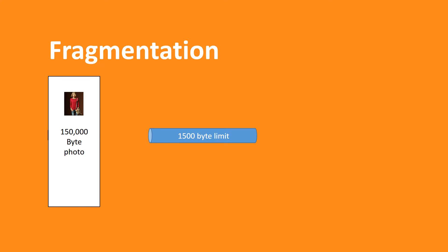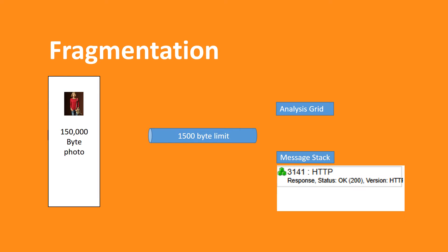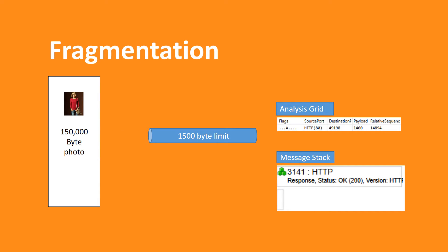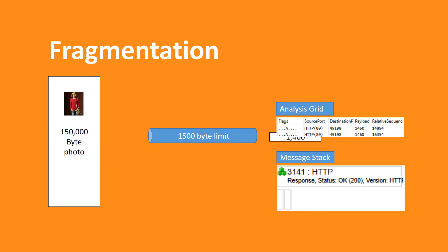Imagine you download an image from a website that is 150,000 bytes. At the very least, that means a hundred fragments to send the image, which equates to a lot of noise, especially if you're interested in only the application-level perspective.